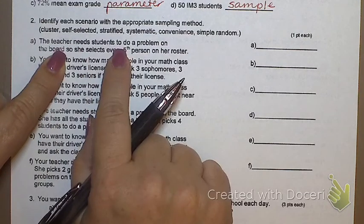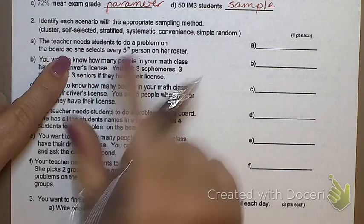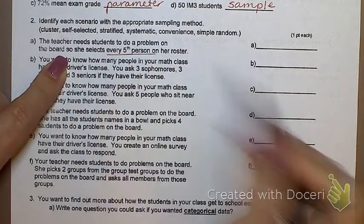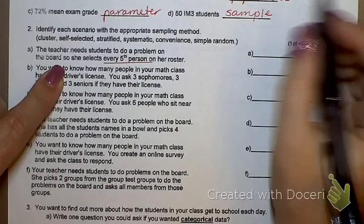The teacher needs students to do a problem on the board, so she selects every fifth person. That right there is my key. What does that make it? Systematic.